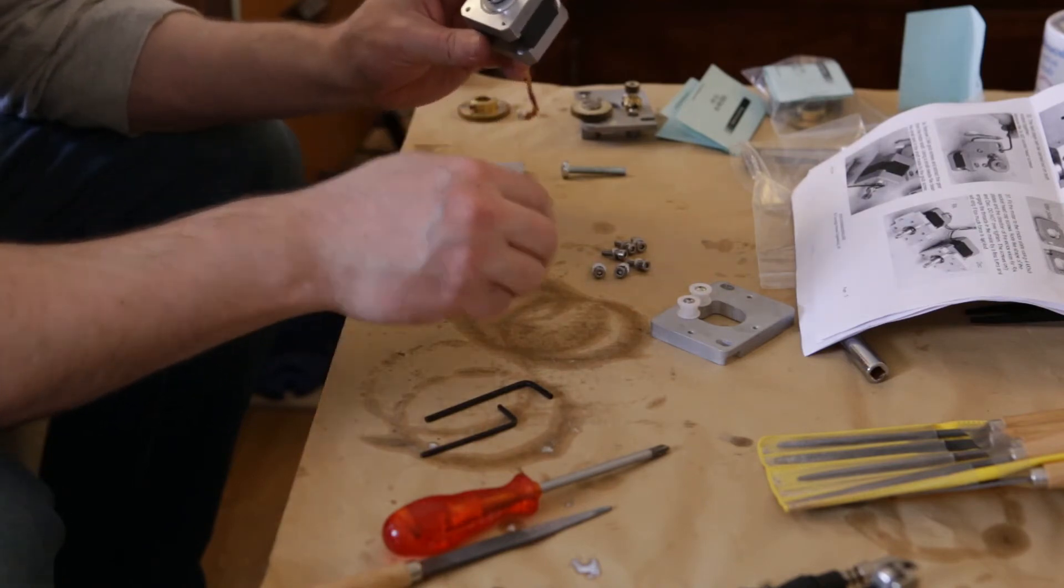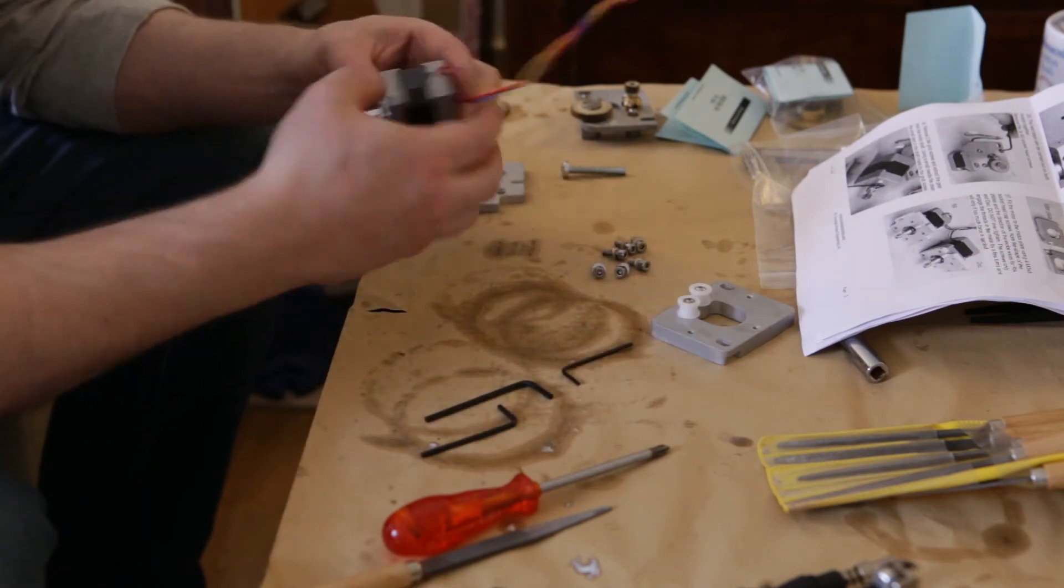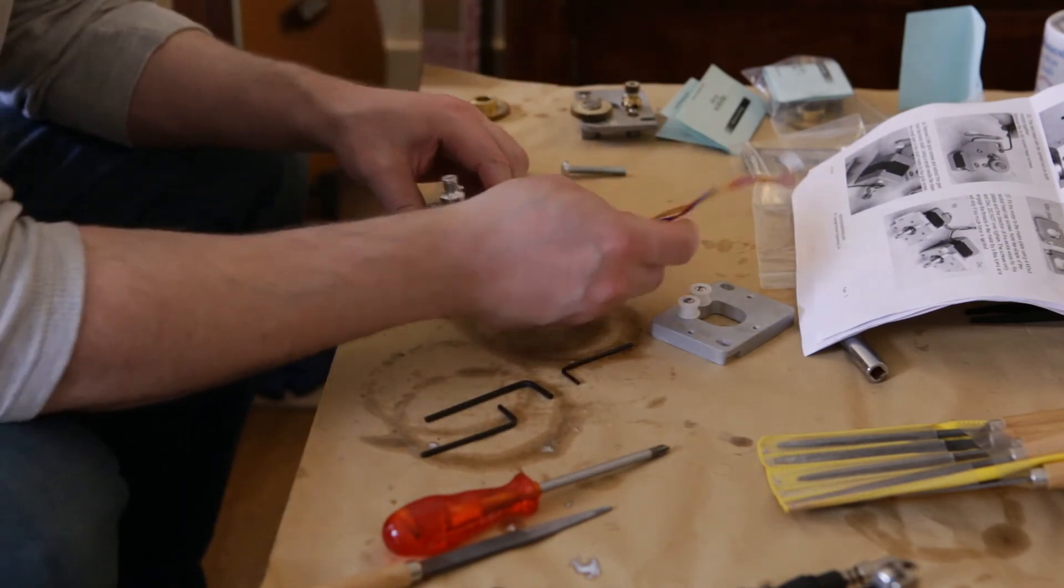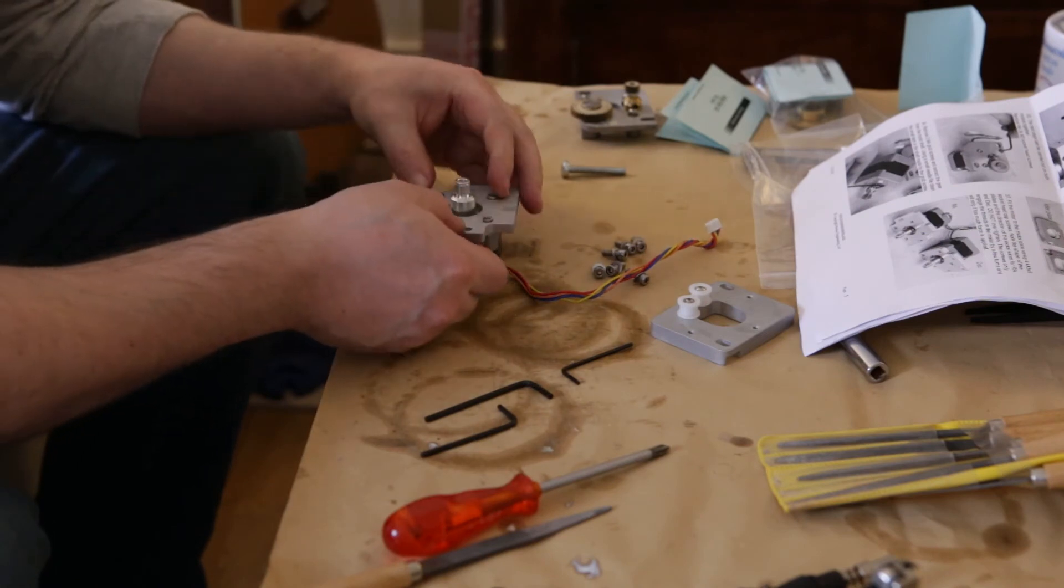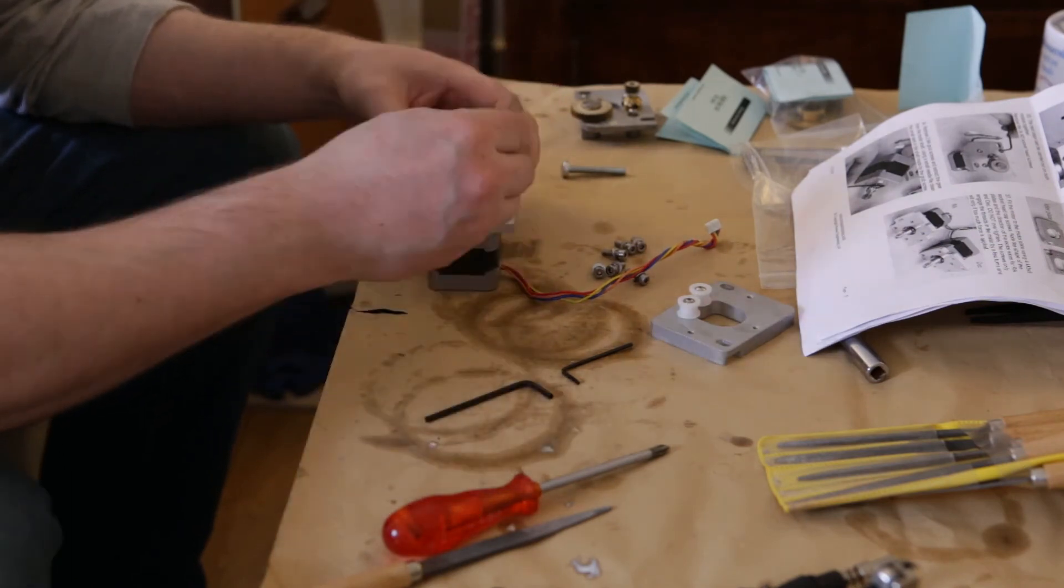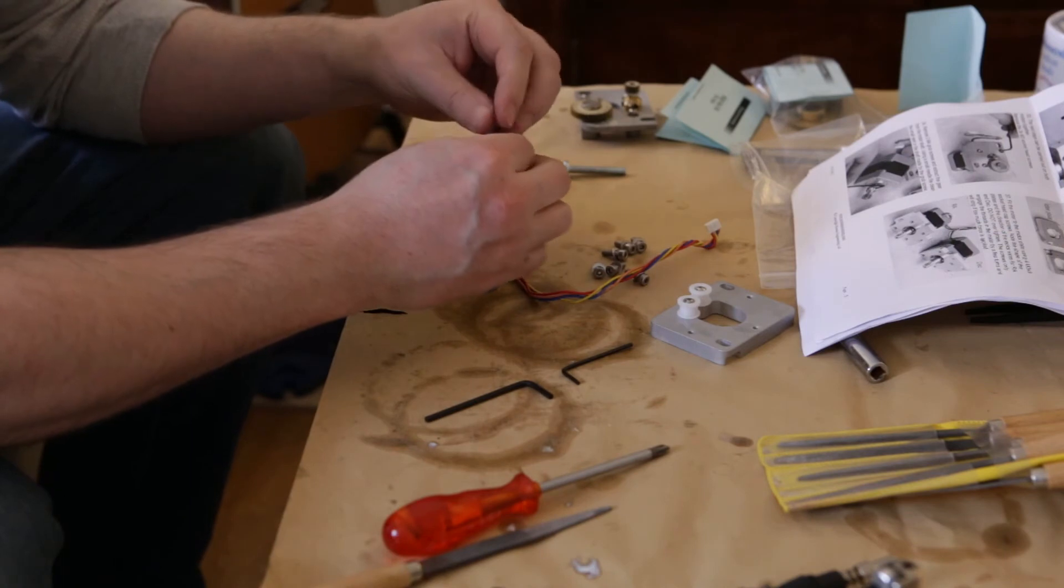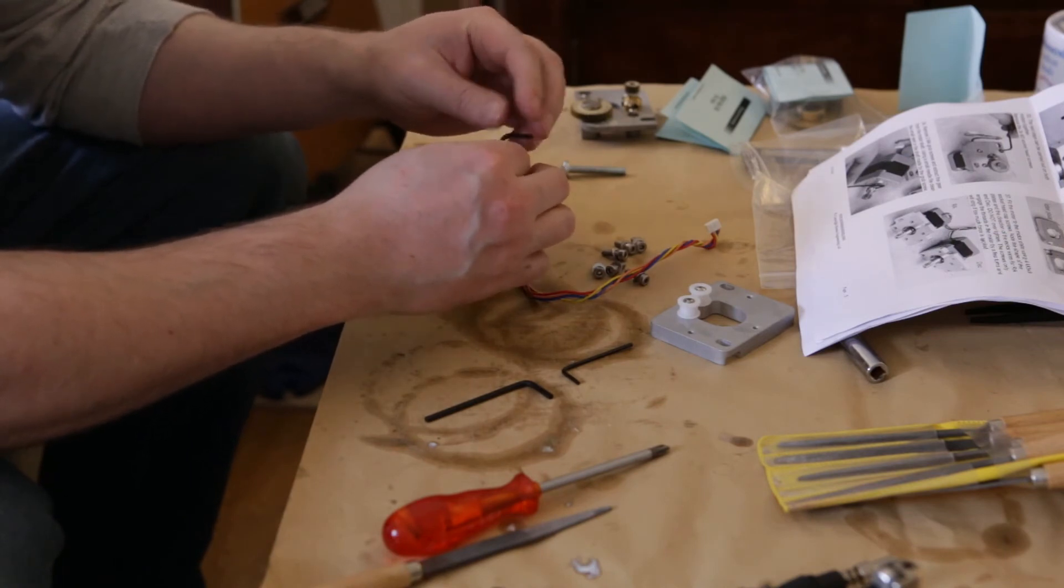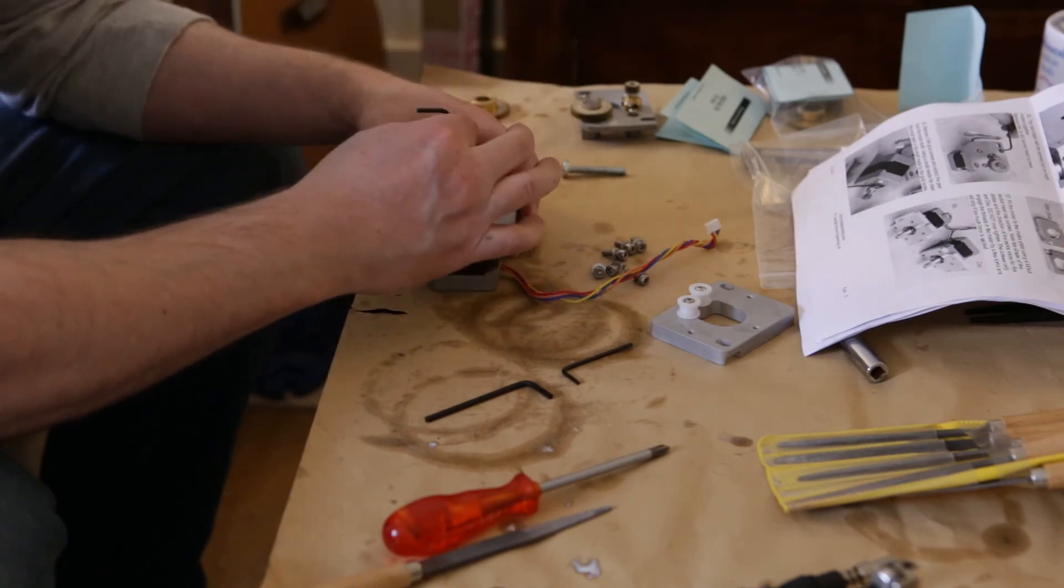And the screws are steel. Now final check. Wires out. Slots out. Plate back in. Now we can tighten these to the final tightness.